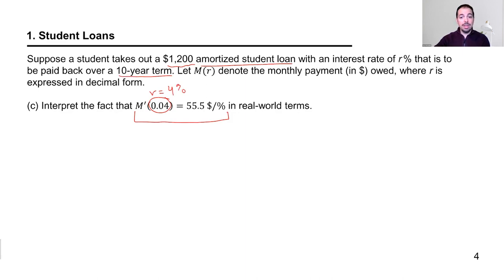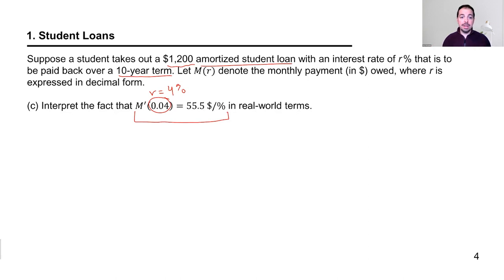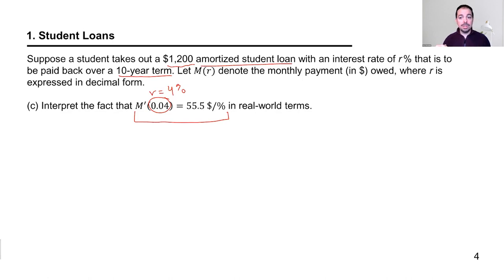In a real-world environment, interest rates change all the time. Right before you take out the loan, the rate might be 4%, but maybe you wait a few days and rates change slightly. Change is at the core of what derivatives help you understand.